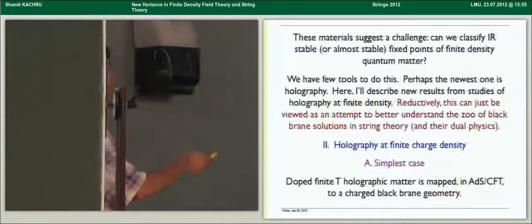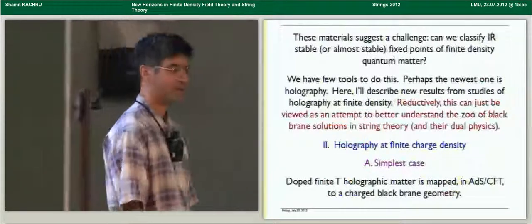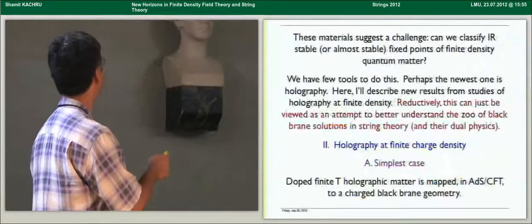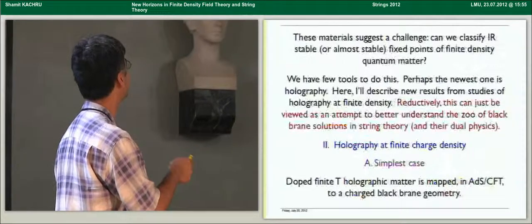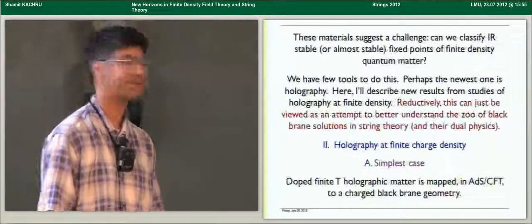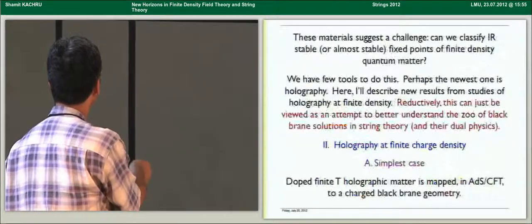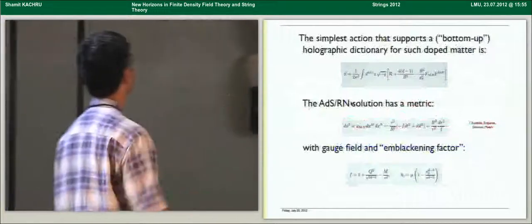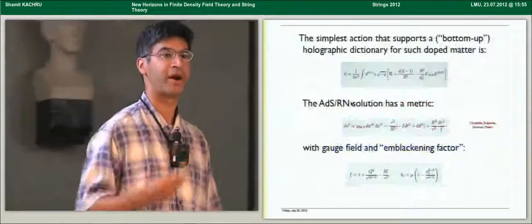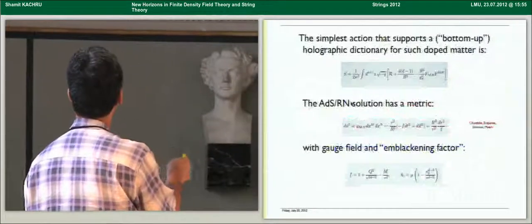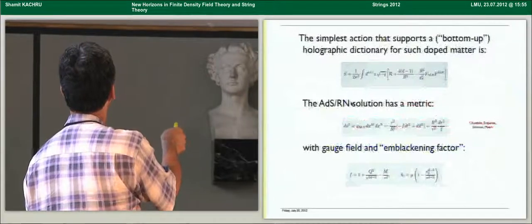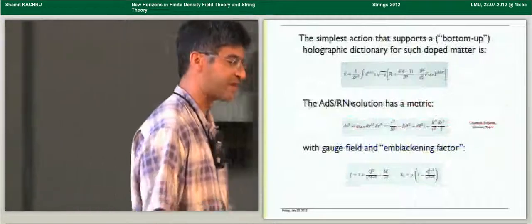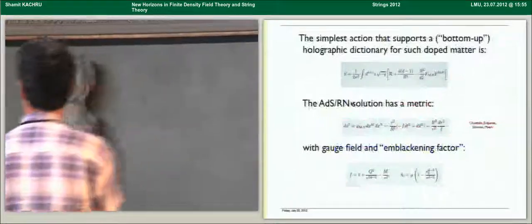So to talk about this well, I have to introduce the simplest cases of holography at finite charge density. What are the minimal ingredients you need to ask questions about things like resistivity? Well, finite temperature holographic matter is mapped in AdS-CFT to a charged black brane geometry. The Hawking temperature of the black brane generates the temperature. The charge is, if you want, the doping of the matter, the extra charges. And the simplest action that would support, at least from the bottom up, a holographic dictionary that would have a current whose conductivity we can compute, would then be that which supports AdS, an Einstein term with negative cosmological constant, and one Maxwell field, whose coupling I've set this way by convention.